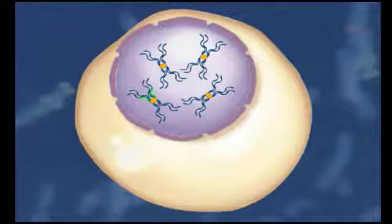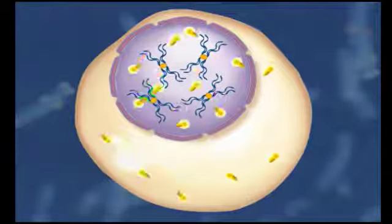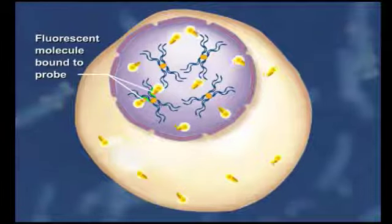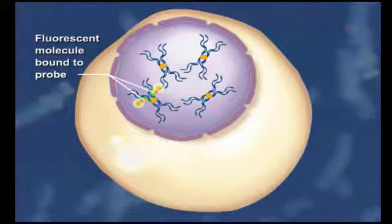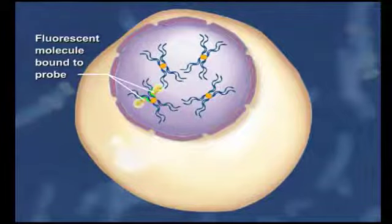Then, fluorescent labeled molecules are added to the slide. Those molecules are able to bind to the DNA probes. Now, excess fluorescent labeled molecules are washed away. The slide is then viewed using a fluorescence microscope. The fluorescent labeled molecules reveal the physical location of the gene of interest.